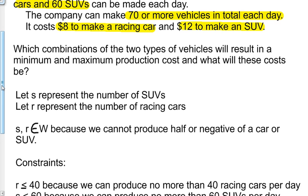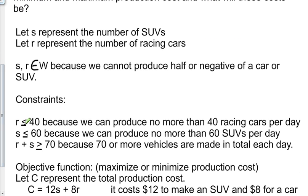So our constraints. R is going to be less than or equal to 40 because we can produce no more than 40 racing cars per day. S is going to be less than or equal to 60 because we can produce no more than 60 SUVs per day. R plus S is greater than or equal to 70 because 70 or more vehicles are made in total each day.